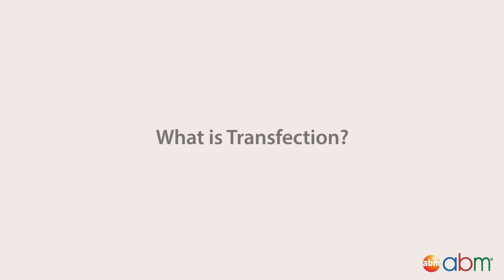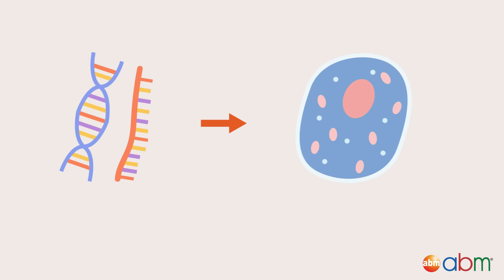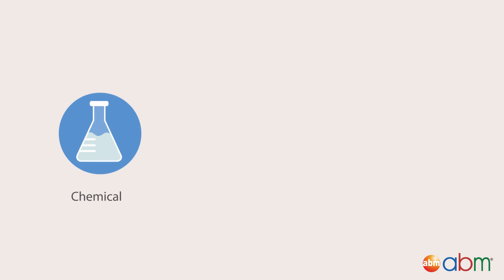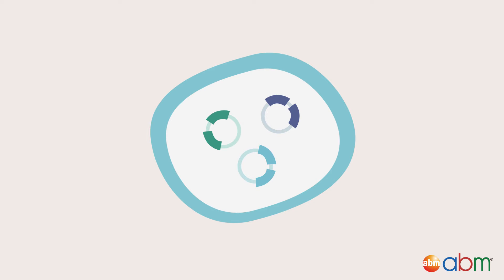What is transfection? Transfection is the process of artificially introducing foreign nucleic acids into eukaryotic cells, usually with a DNA plasmid through chemical, biological, or physical methods, which results in the change of the cell properties.